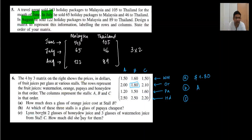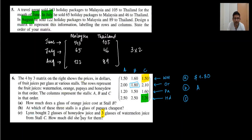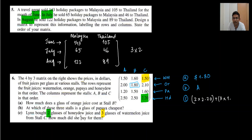Part (c): Lim bought two glasses of honeydew juice and three glasses of watermelon juice from stall C. From stall C, honeydew juice is $2.20 per glass, so two glasses cost 2 × $2.20 = $4.40. Watermelon juice at stall C is $1.50 per glass, so three glasses cost 3 × $1.50 = $4.50. Total: $4.40 + $4.50 = $8.90.